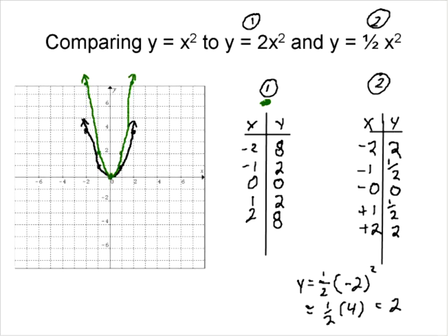So, now what I'm going to do is I'm going to go in red and plot the other points. Negative 2, 2, 1 and a half, 0, 0, 1 and a half, 2, 2. So, we have a parabola that looks like this. Like so.